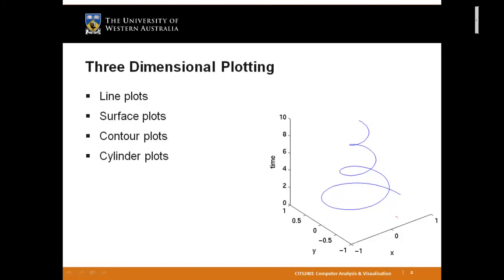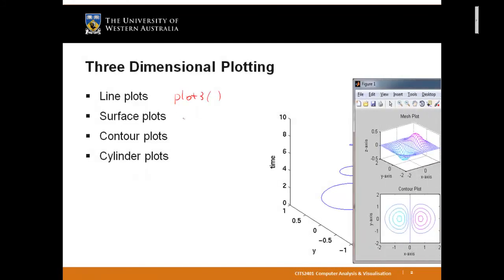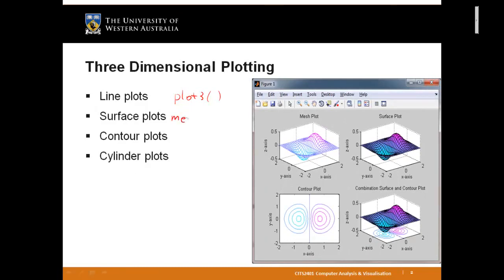As one would expect, in a three-dimensional space, in addition to X and Y, we should also have a third dimension, which might be representing height, might be representing time, and so forth. The relationship among X, Y, and Z determines the most suitable type of plot. I'll use examples to show you how to generate line plots using function plot3, how to create surface plots such as a mesh plot using function mesh, and function surf to create a surface plot, and then a contour plot using the contour function.